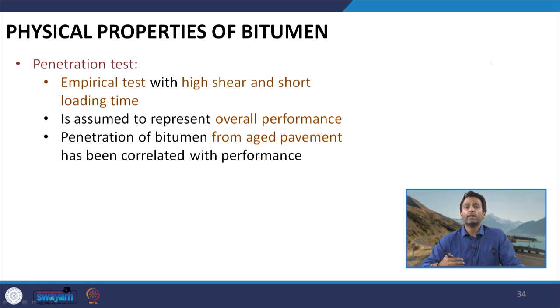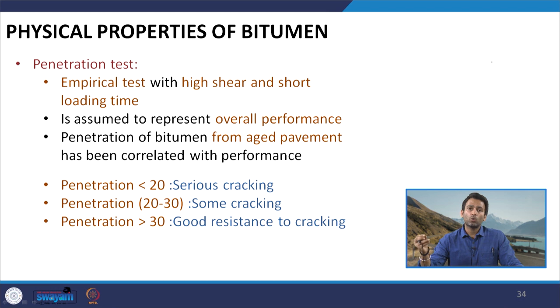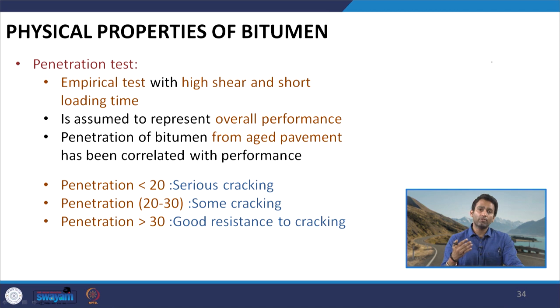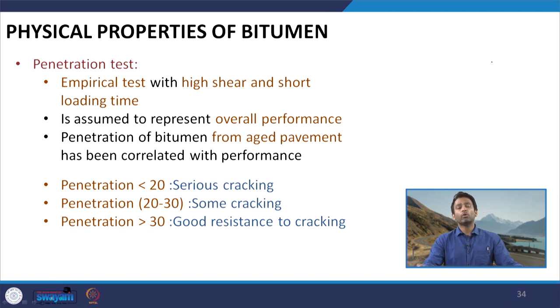However, there is evidence that penetration values of bitumen collected from aged pavement have been correlated with the occurrence of cracks in the field. A few research studies have indicated that when the penetration of bitumen drops to less than 20 in the actual field, serious cracking starts appearing on the pavement. If the penetration value of aged bitumen ranges from 20 to 30, some cracking has been observed.